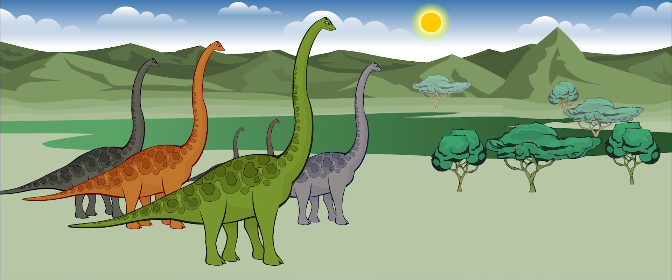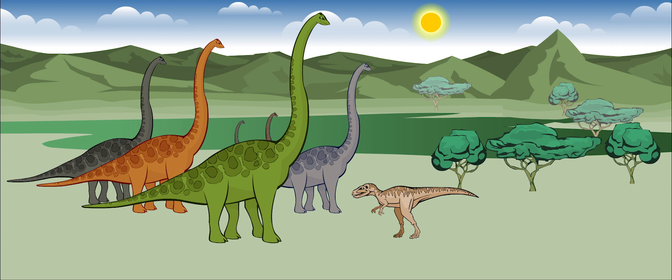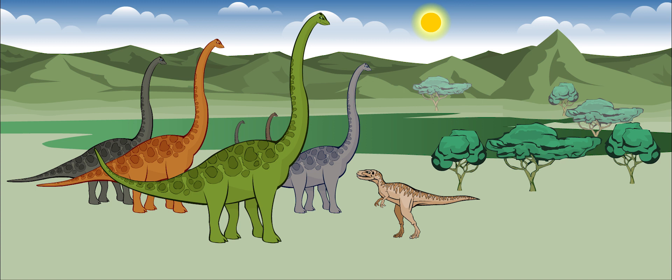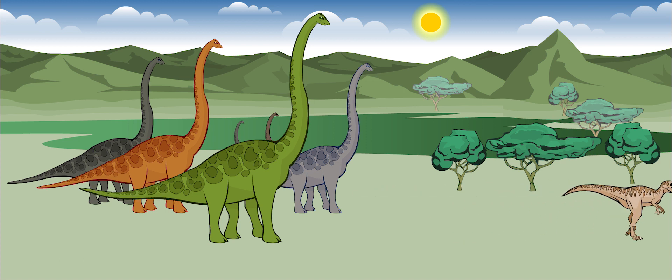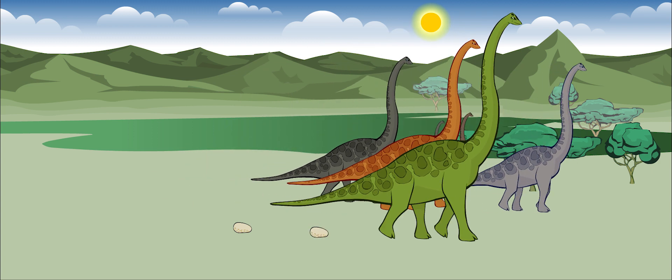The best defense this dinosaur had was its size. It was so big that most carnivores stayed far away. It also had a thick tail that could whip away most big hunters. Brachiosaurus had leathery skin that was difficult to bite through.